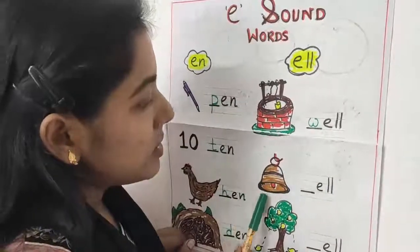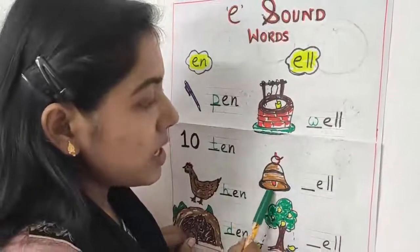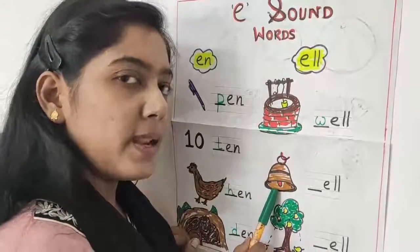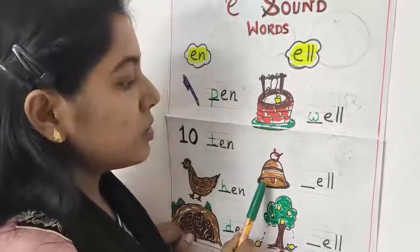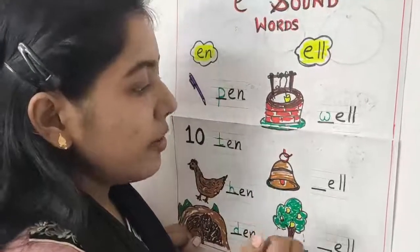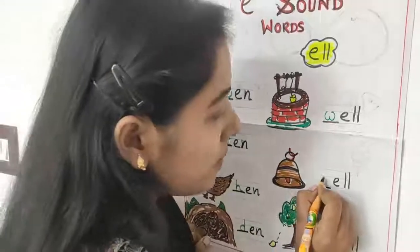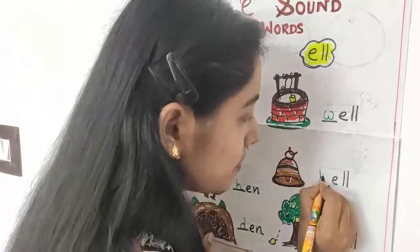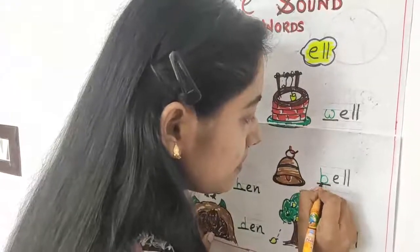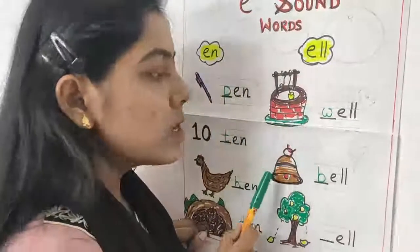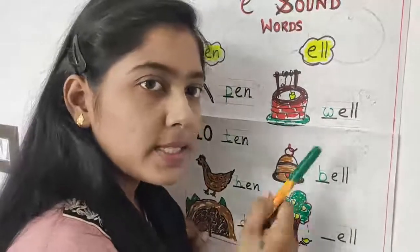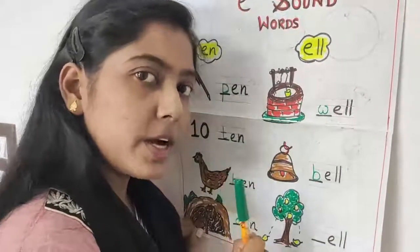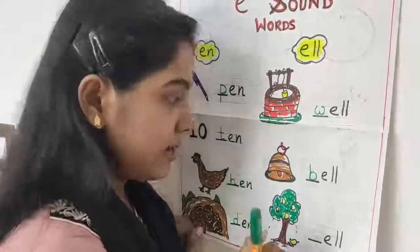Now see the next picture. What is this? Bell. B for bell. Bell — it is like a vessel that makes a sound when struck. That is called bell.